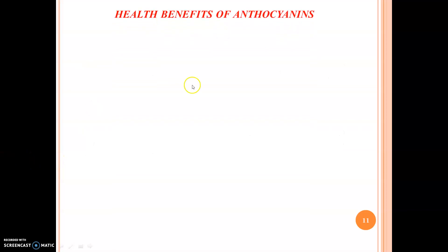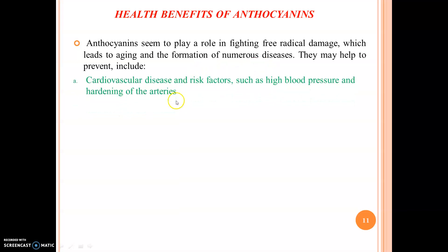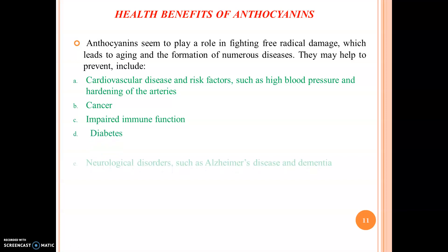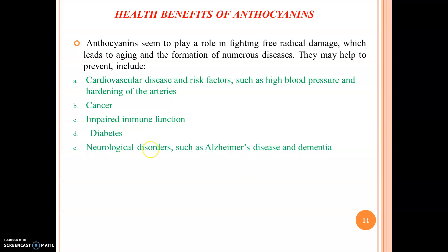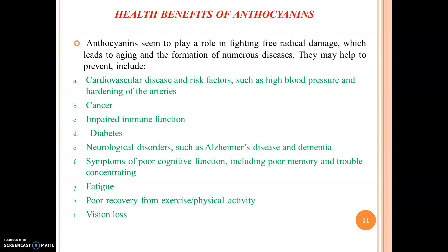Health benefits of anthocyanins: anthocyanins seem to play a role in fighting free radical damage which leads to aging and formation of numerous diseases. They may help prevent cardiovascular disease and risk factors such as high blood pressure and hardening of arteries, cancer, impaired immune function, diabetes, neurological disorders such as Alzheimer's disease and dementia, symptoms of poor cognitive function including poor memory and trouble concentrating, fatigue, poor recovery from exercise and physical activity, vision loss, and obesity.